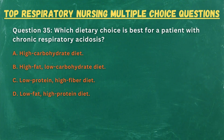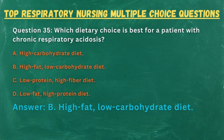Question 35. Which dietary choice is best for a patient with chronic respiratory acidosis? A. High-carbohydrate diet. B. High-fat, low-carbohydrate diet. C. Low-protein, high-fiber diet. D. Low-fat, high-protein diet. Answer: B. High-fat, low-carbohydrate diet.